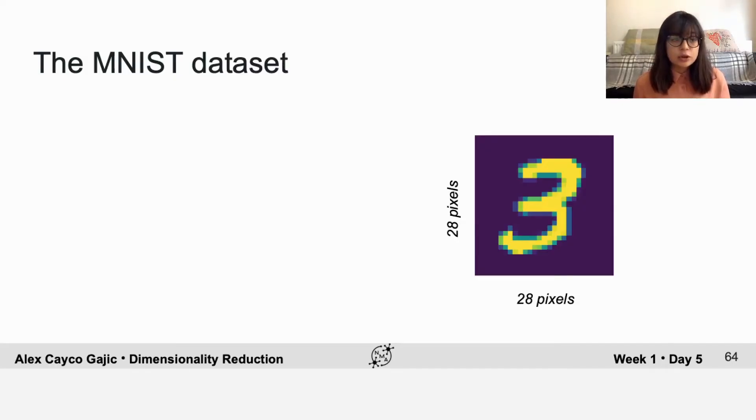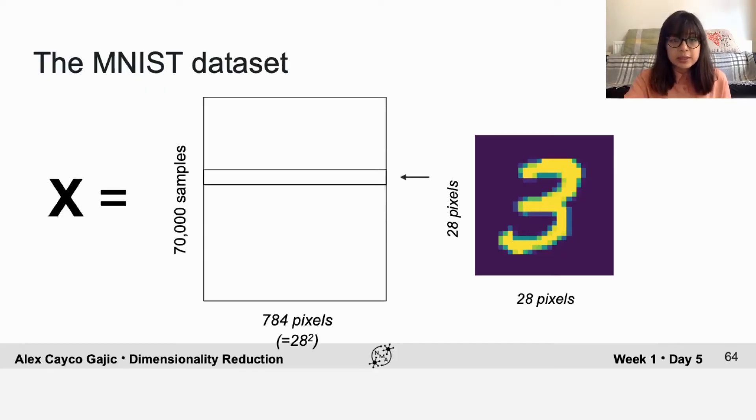Each sample is a 28 by 28 pixel image of a different digit. To take a neuroscience analogy, you could imagine that each pixel is the firing rate of a different retinal ganglion cell, and this is a little patch of the retina.